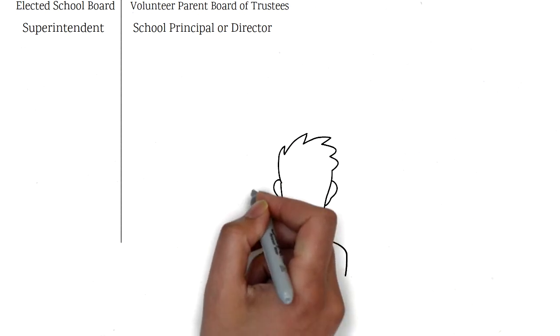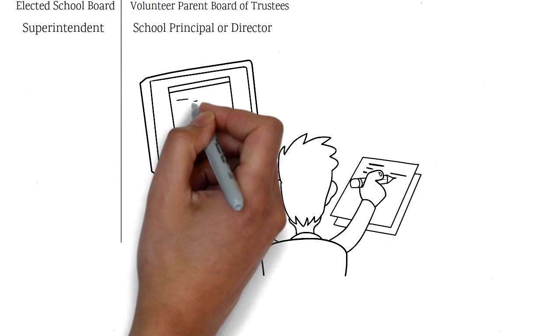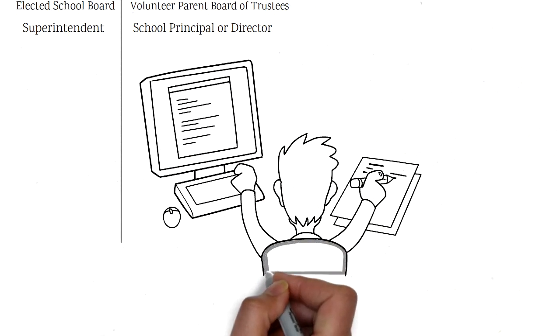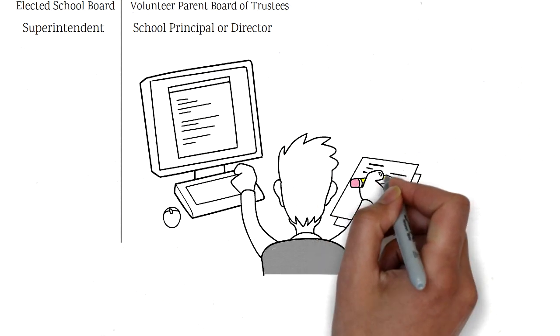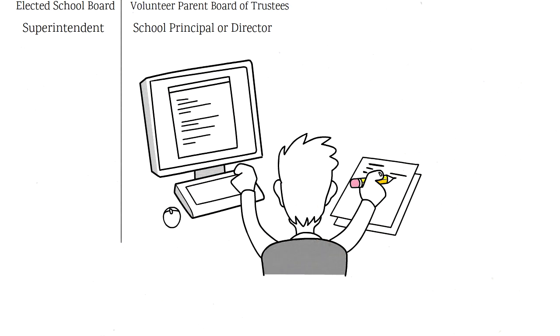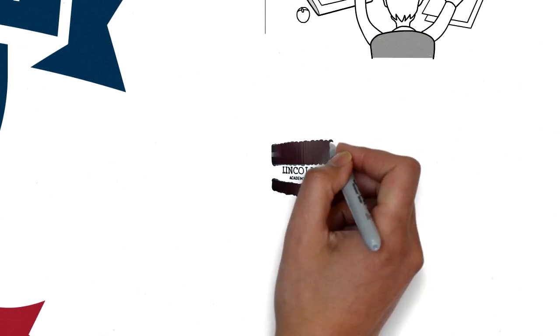All charter and district school boards are responsible for reporting to the State Board of Education and meeting all federal and state requirements for schools. As a charter school, we are a public school and are required to meet the same standards for the hiring of teachers, testing of students, and completion of reports and grants.